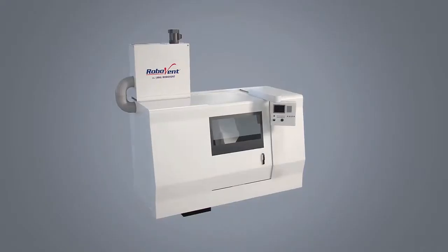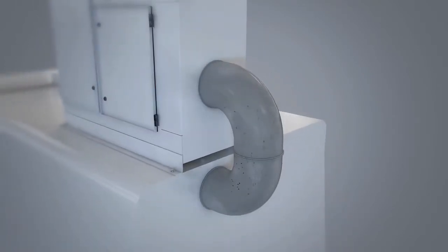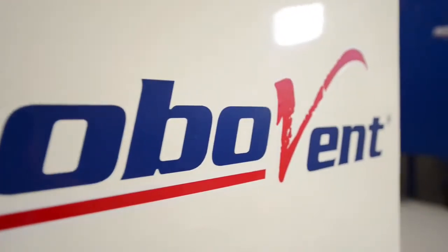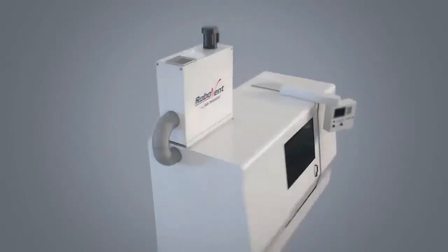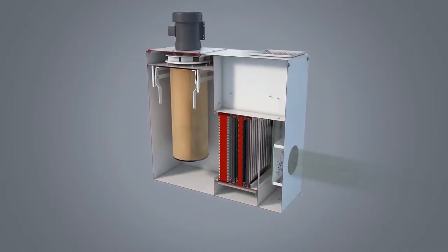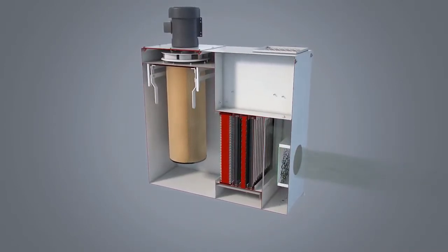Mist and smoke are drawn up into the Clarion unit, where the coolant is captured and recirculated back into the machining center. The very fine mist, along with smoke, now meet up with a five-stage filtration process.